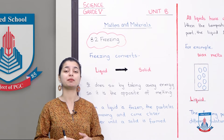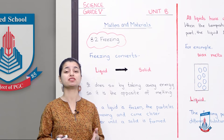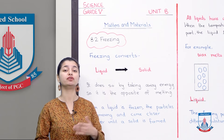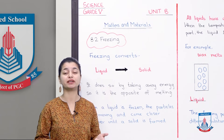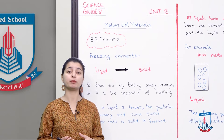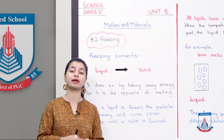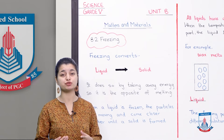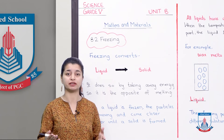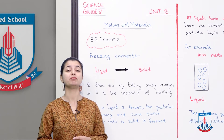In the last lecture, we talked in detail about melting. The process of melting was that you convert a solid into a liquid by giving it energy in the form of heat. The solid particles, when they get energy, start to move quickly and because of that they move away from each other, and then they turn into a liquid.